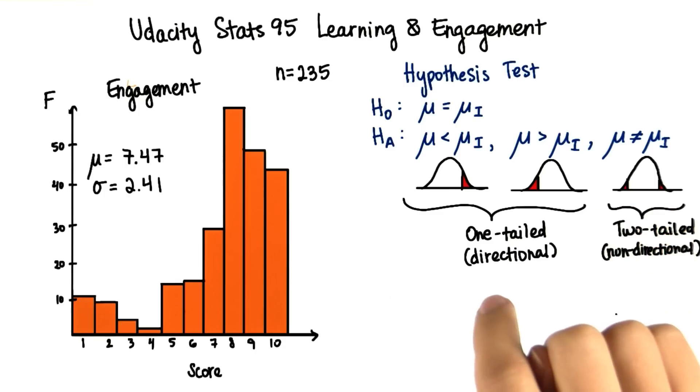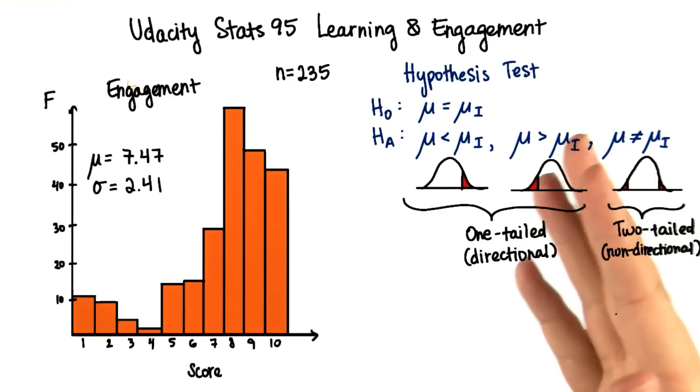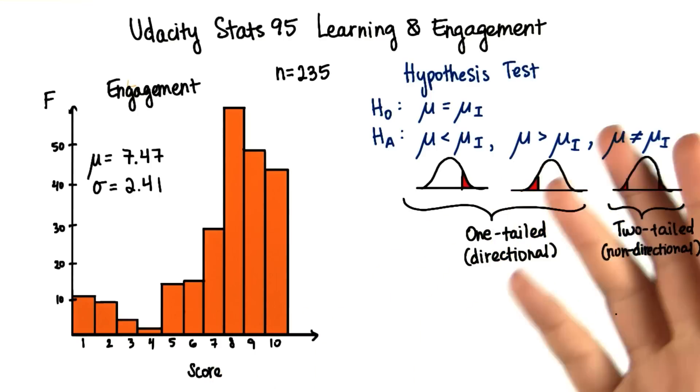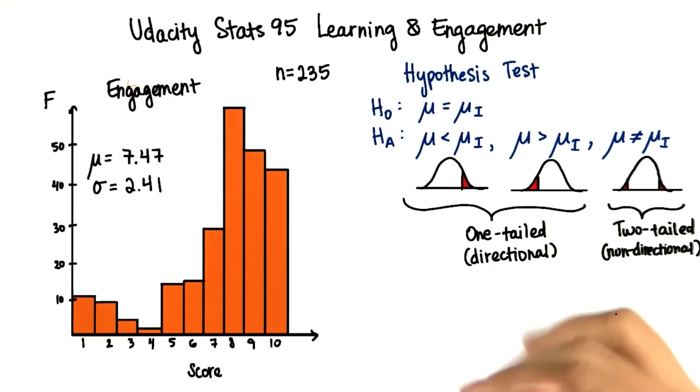One exception to this general rule is when we're comparing a new treatment with an established treatment. In such cases, we often only care if the new treatment is better than the old one. We don't care if the new one is much worse. So that's when we would use a one-tailed directional test.